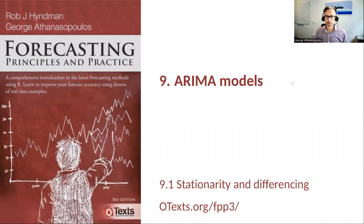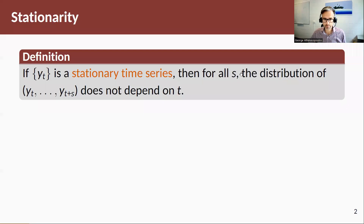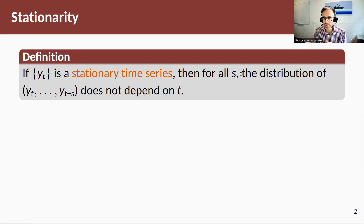Before we start thinking about building our own models, we need to think about the concept of stationarity. How do we define a stationary time series? A stationary time series is one for which, when we look at different parts of the series, the joint probability density of those different parts will look almost identical — indistinguishable between them.